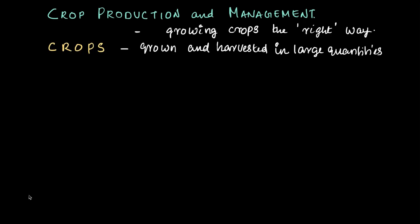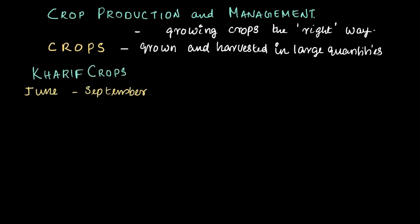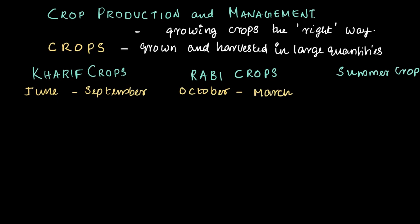To recap — we started with the big question: how do we grow enough crops to feed everyone while keeping the soil healthy? That's where crop production and management comes in. A crop is a plant grown and harvested in large quantities. In India, with its diverse climate, crops are grown in different seasons and classified into three types: Kharif crops, grown during the rainy season of June to September; Rabi crops, grown during winter from October to March; and summer crops, grown during April and May.